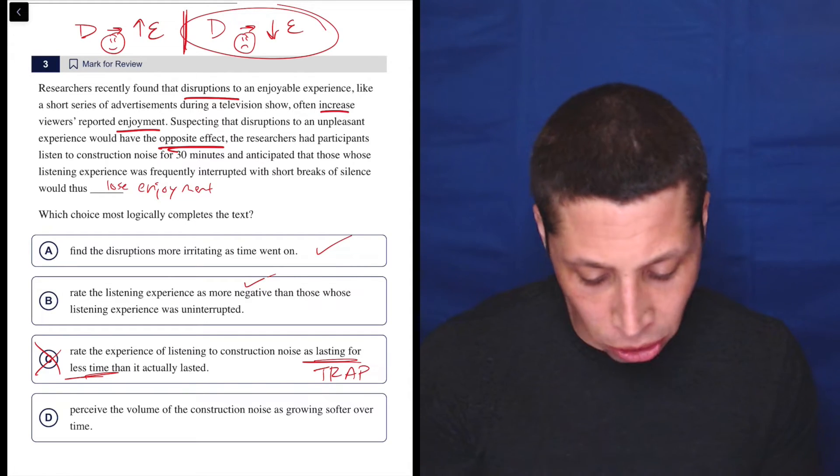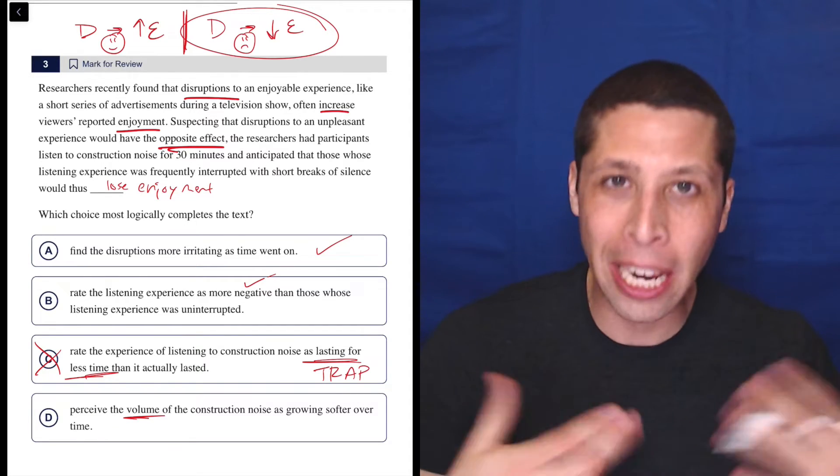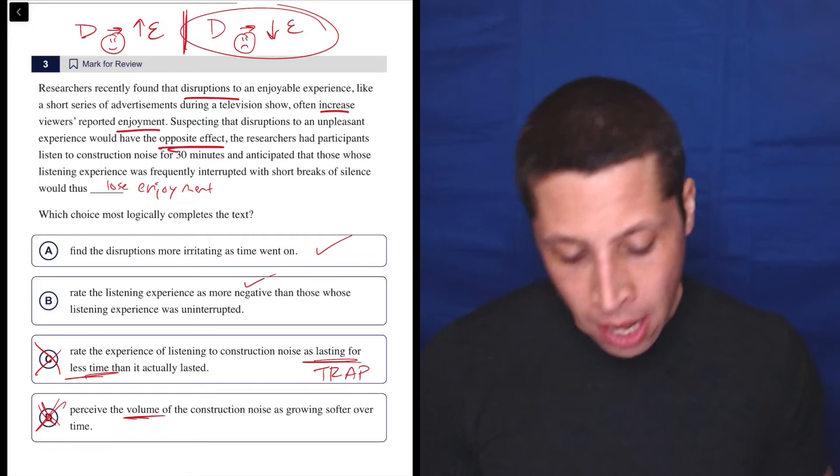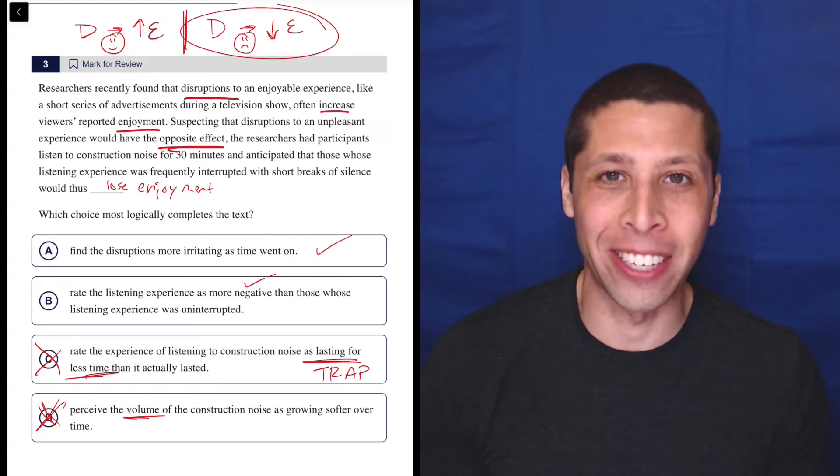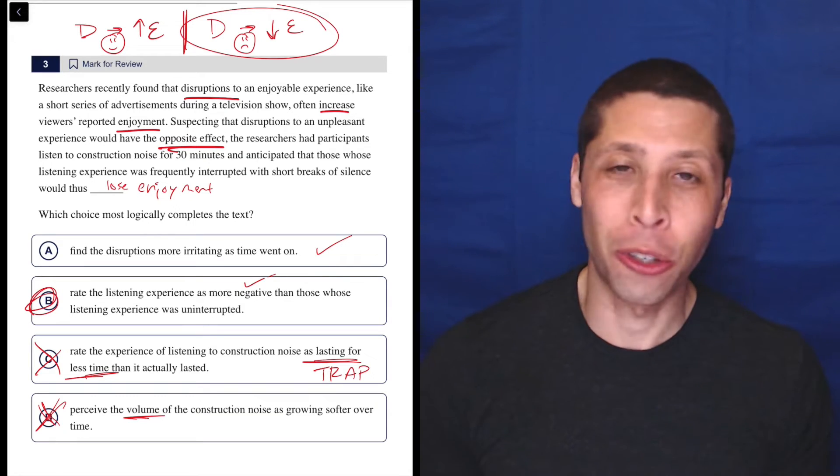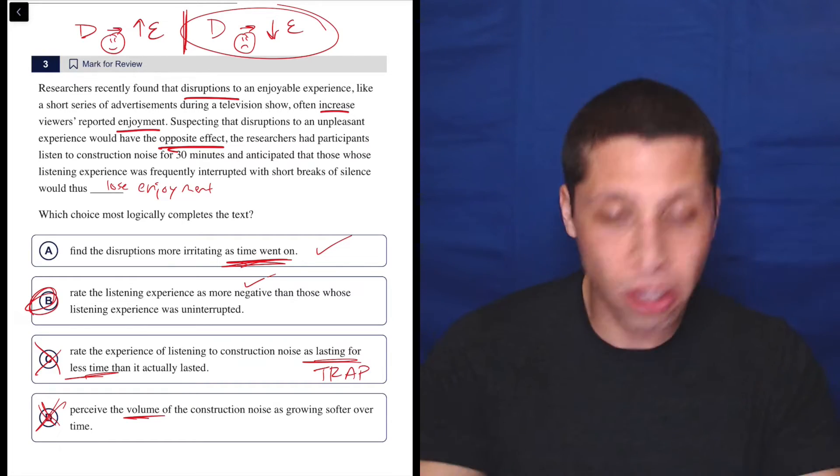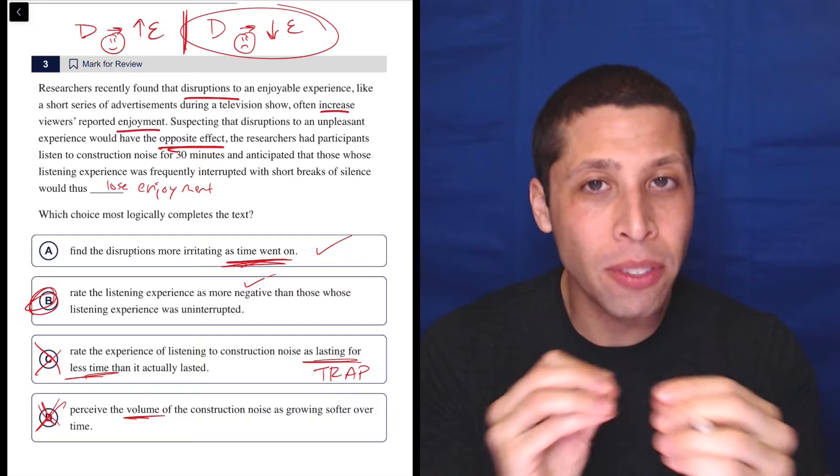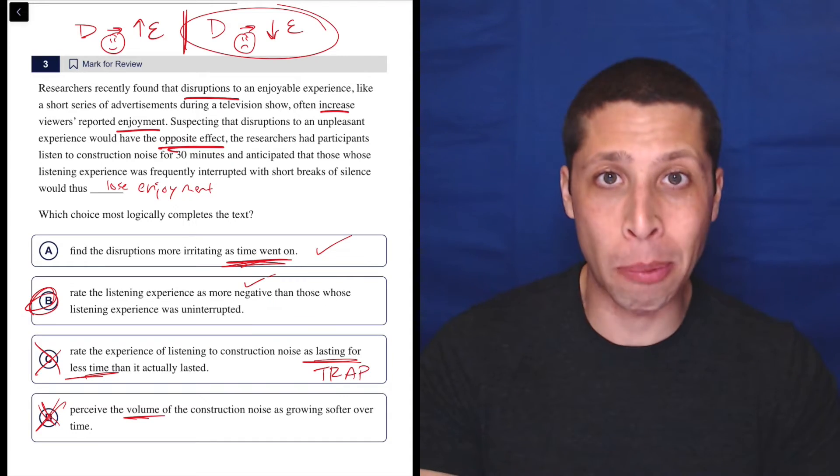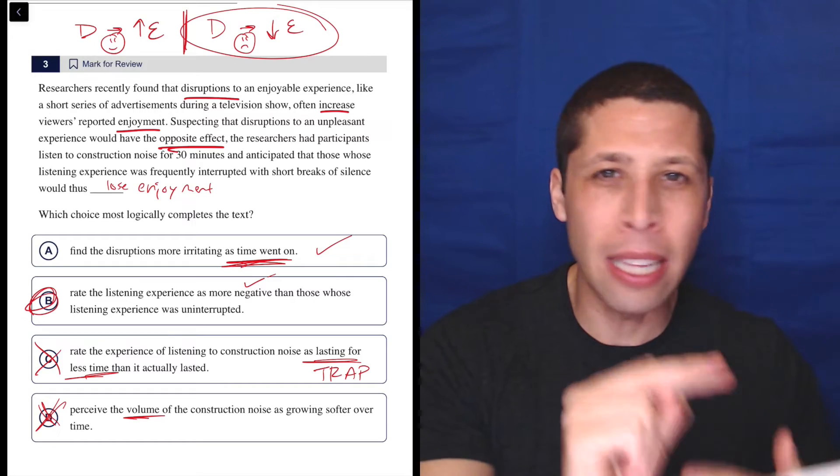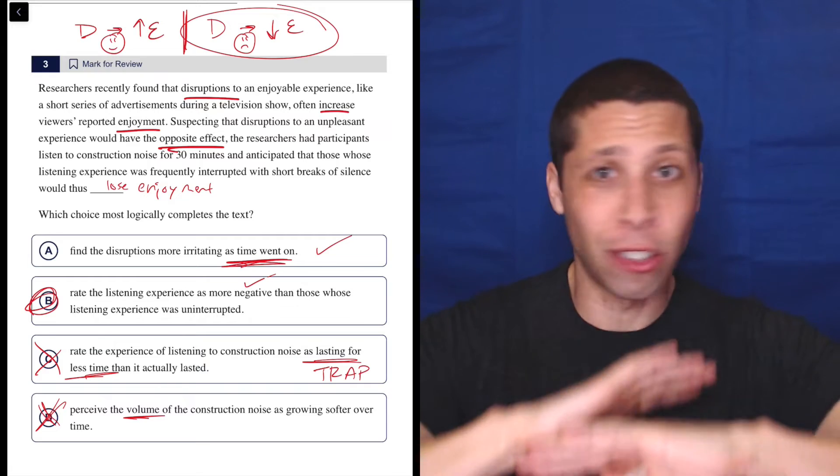D, perceive the volume of the construction noise as growing softer over time. That I think is more obviously wrong. There's no common trap about volume on the SAT, but it's a case where we're bringing up something that just wasn't mentioned. So not a good sign. Now here, if we were just listening to what I said and you understand how SAT traps work, the answer is obvious. It's very clearly B. Because what does choice A do? It talks about time. This is not about how the enjoyment changed over time. Notice, neither is our dumb summary, right? Our arrows do not involve time. It talks about increases and decreases in enjoyment based on the presence of disruptions. Not how long the disruptions last, not how late we are in the experience as to how those disruptions affect the experience. It is purely a higher and lower, just overall experience.